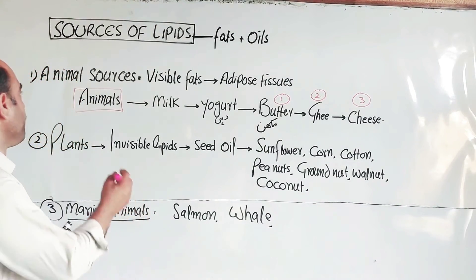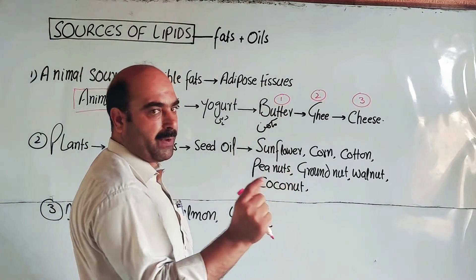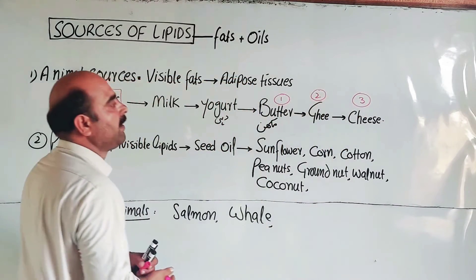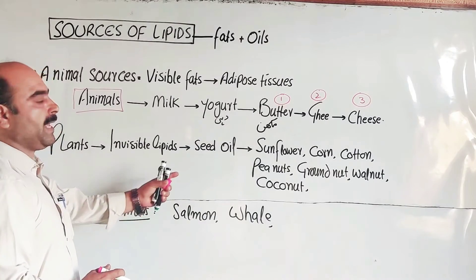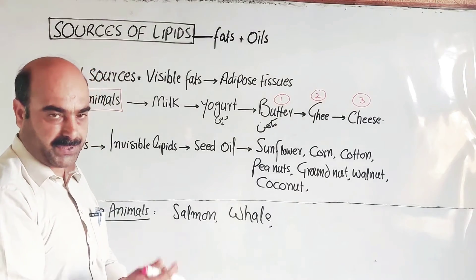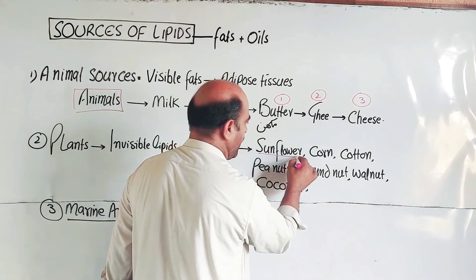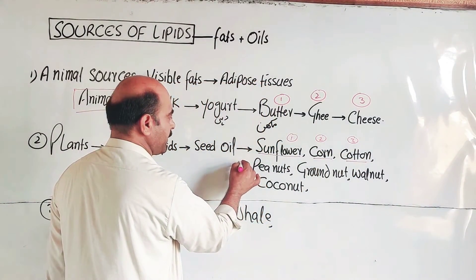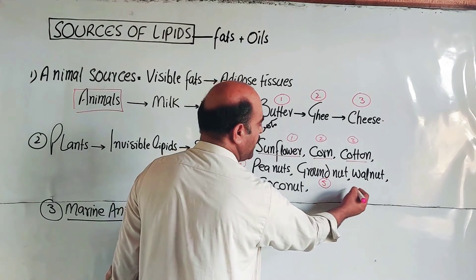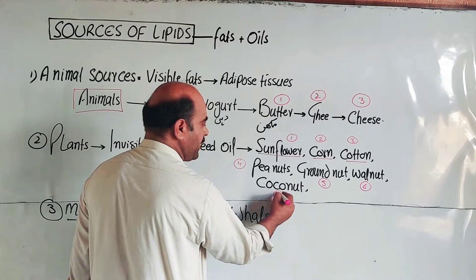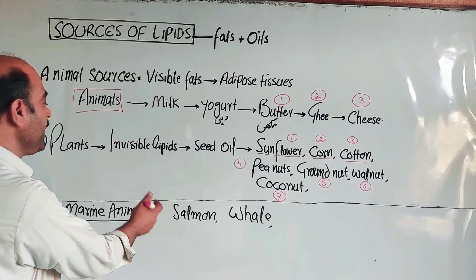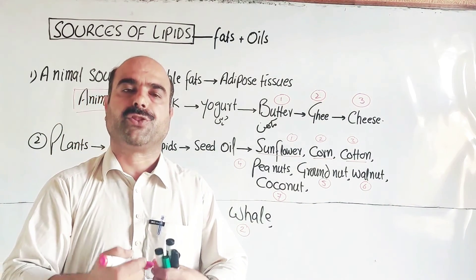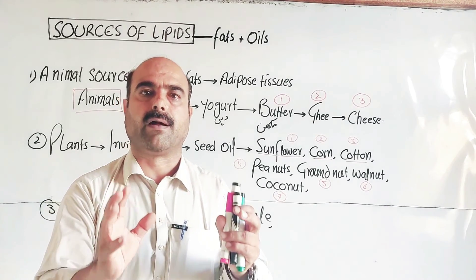So these were all about the three main sources of lipids. First, animal sources — visible parts of adipose tissue, and indirectly through butter, cheese, and dairy. Second, plant sources — invisible lipids in seeds like sunflower, corn, cottonseed, peanuts, groundnut, walnut, and coconut. Third, marine sources — salmon fish and whale. These were the main three sources of lipids according to your book. Thanks a lot for watching the video.